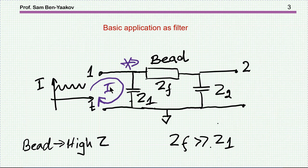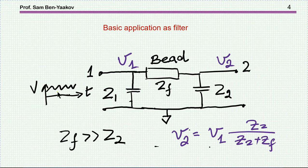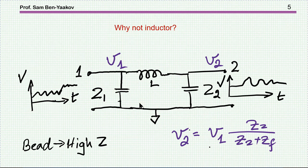The basic application of a ferrite bead is as part of a filter. In this case we have a bead and two capacitors. If a current is injected into this section, due to the high impedance of the bead, the current will be locked at the input. If the capacitor impedance is low at high frequency, this will eliminate the ripple current from going into the secondary. Similarly, if you have a voltage ripple, the impedance of the bead being much higher than the capacitor gives you attenuation, and V2 will be much lower than V1.